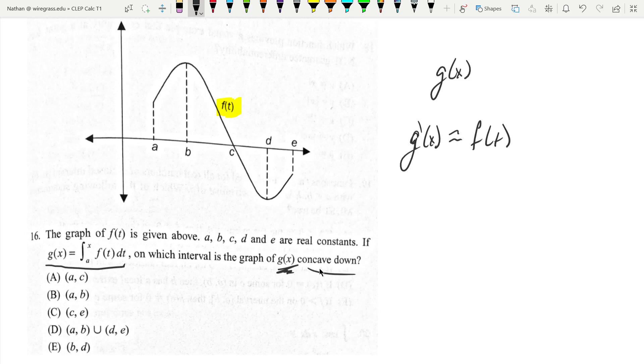And so what we're looking for, right, concavity depends on when the second derivative is positive or negative. So the second derivative would be the derivative of f of t.